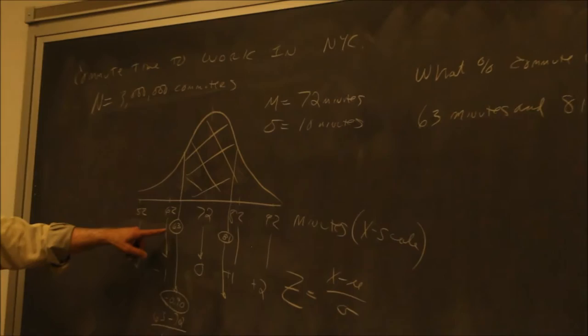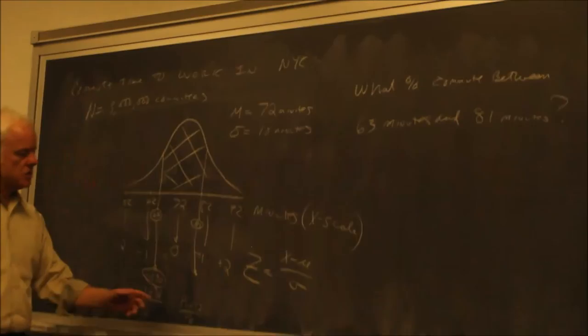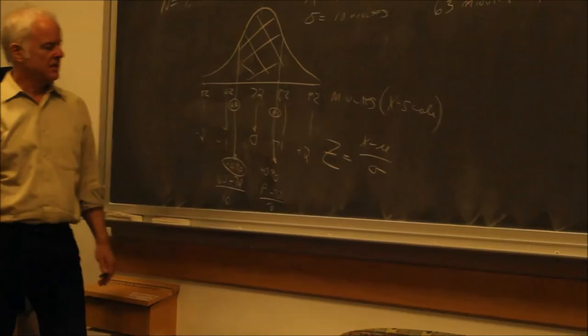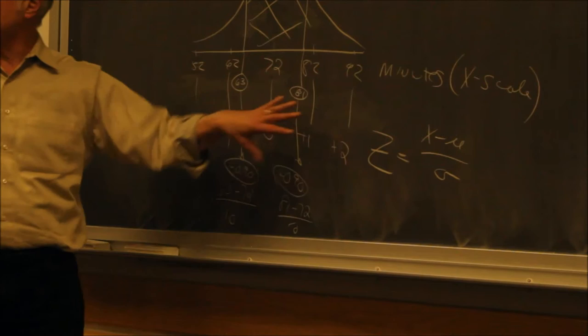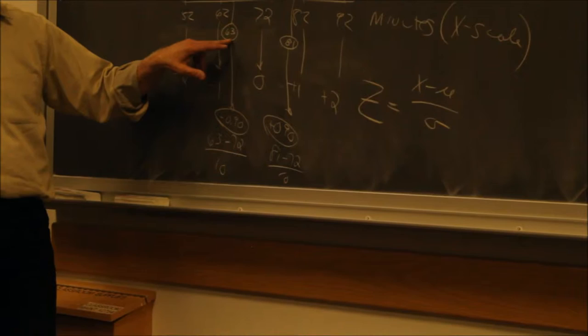To convert 63 to z: 63 minus 72 divided by 10. That's minus 9 divided by 10, which equals minus 0.90. For 81 minutes: 81 minus 72 over 10, which is 9 divided by 10, equals plus 0.90. So on the z-scale we're looking for the area between minus 0.90 and plus 0.90, which corresponds to the area under the curve between 63 and 81 minutes.